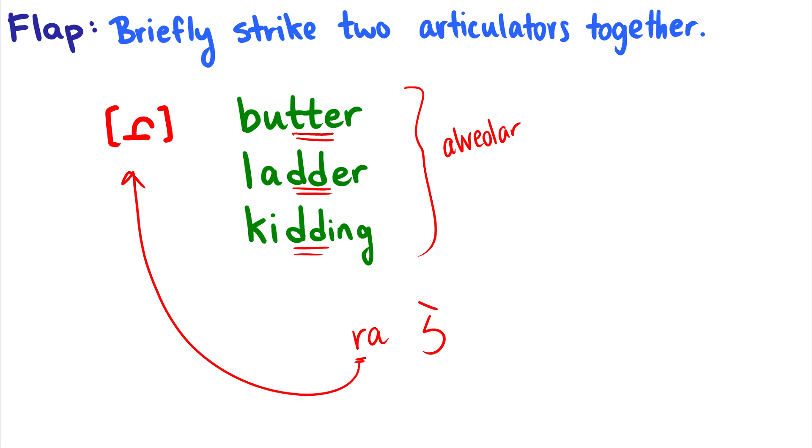So if you know some Japanese, that might help you hear the sound, but usually there's rules for understanding where flaps come. Butter, ladder, kidding. It'll always be between usually two vowels. The first one will be slightly louder than the second one, so kidding, ladder, butter, and then you get that flap. We'll have some practice with it in a few slides.